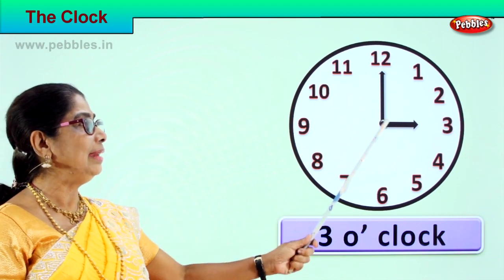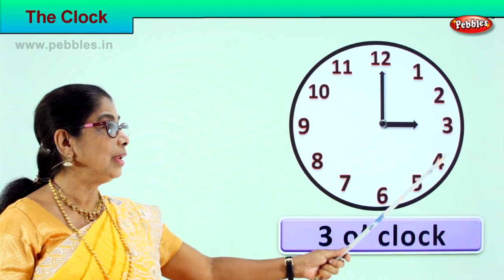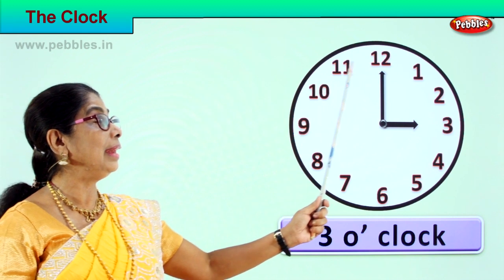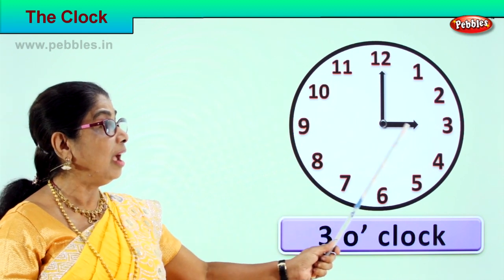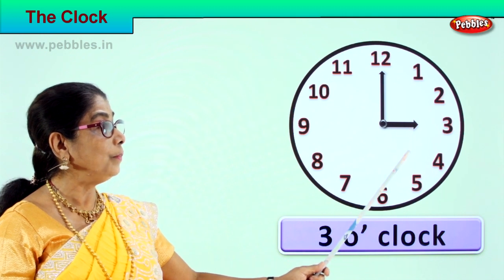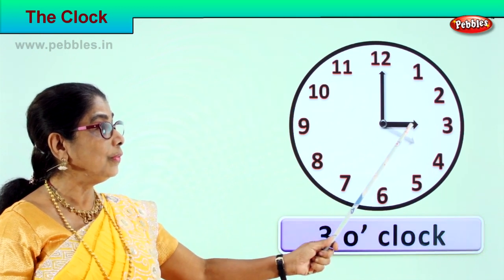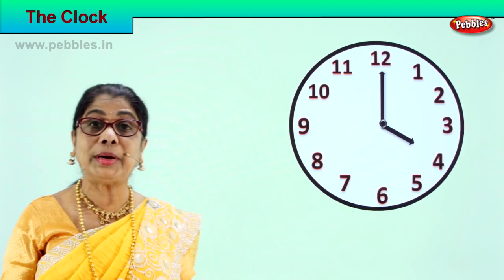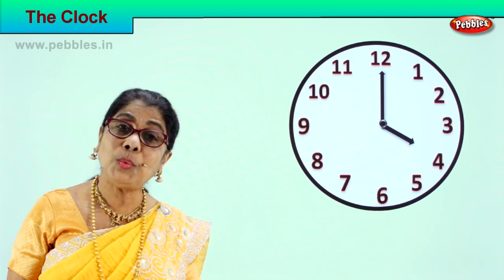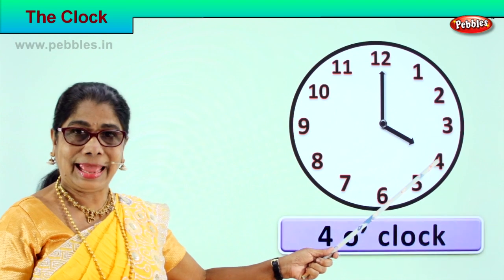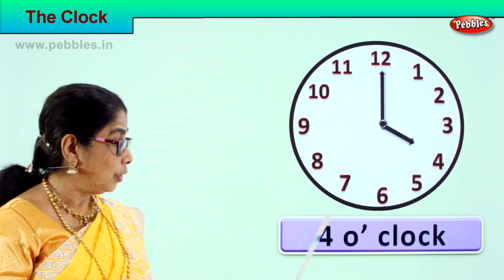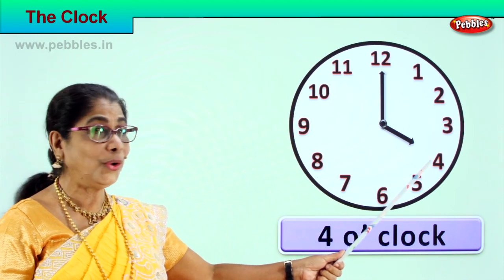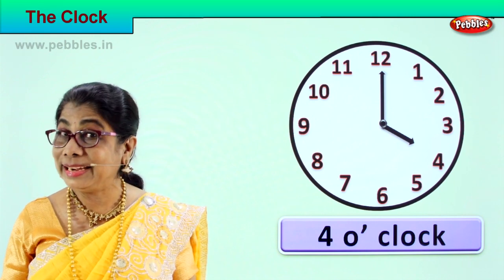Now the minute hand goes from one to two to three, all the way to eleven, and it comes back to twelve. The hour hand shifts from three to four. The hour hand is pointing towards four. What is the time now? We read it as four o'clock. The hour hand is on four, so we read it as four o'clock.